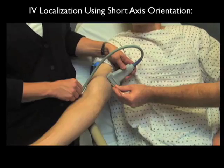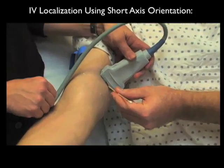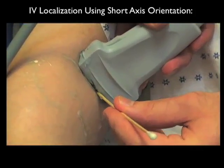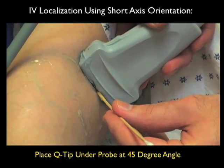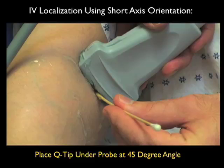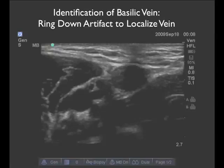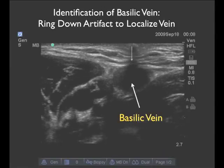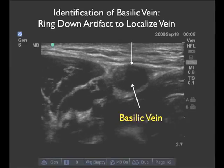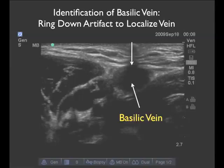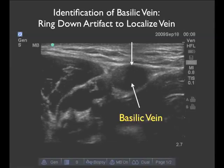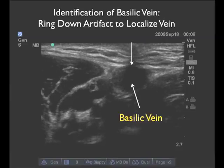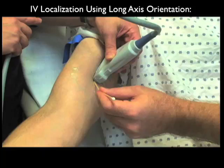Once we've selected a favorable target vessel for cannulation, we can place the probe in a short axis or side-to-side orientation. Here we're using a Q-tip coming in underneath the probe at a 45-degree angle to look for the ring-down artifact for guidance for placement of the IV in a side-to-side or lateral orientation on the patient's arm. We can look for a finding known as the ring-down artifact on the ultrasound screen. Notice we have a nice plump basilic vein in the middle of the field, and we can see a dark mark emanating from the surface directly down, which is the ring-down artifact caused by pressure from the Q-tip. This would be the appropriate poke point for placement of the IV.